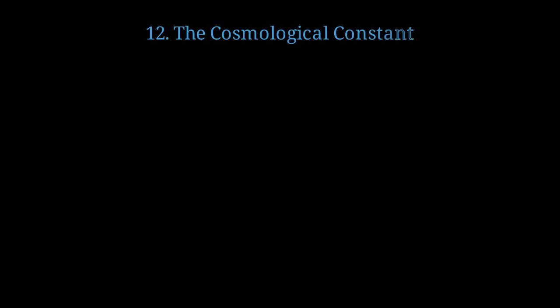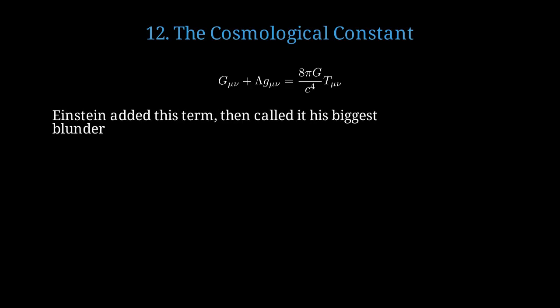Let's look at Einstein's cosmological constant and its role in this puzzle. Einstein's field equations with the cosmological constant lambda. Lambda represents the energy density of empty space. Einstein added the cosmological constant to make the universe static, then removed it, calling it his biggest blunder. Now we know it's needed, but we can't calculate its value. The observed cosmological constant is about 10 to the minus 52 per meter squared. This is extraordinarily small.